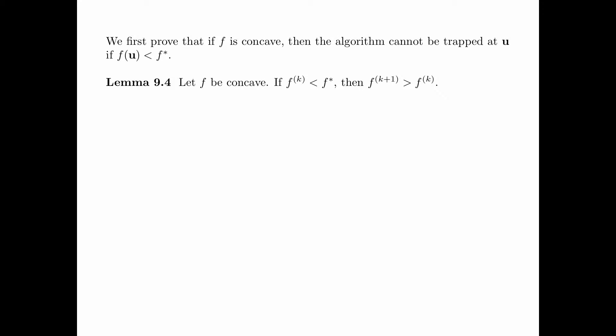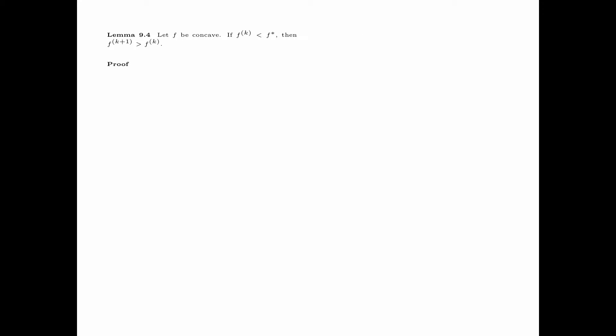In Lemma 9.4, we first prove that if f is concave, then the algorithm cannot be trapped at u if f(u) < f*. Specifically, let f be concave. If f_k < f*, then f_{k+1} > f_k. It suffices to prove that delta_f(u) > 0 for any u in A such that f(u) < f*. Then if f_k < f*, we have f_{k+1} − f_k = delta_f(u_k) > 0, and this proves the lemma.